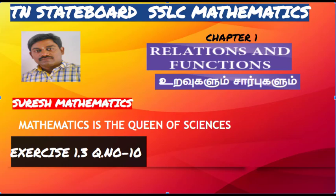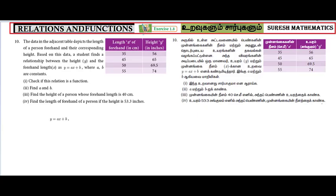Hi students, 10th Maths Chapter 1, Relations and Functions, Exercise 1.3, Question 10. The data in the adjacent table depicts the length of a person's forehand and their corresponding height. A student finds a relationship between the height y and the forehand length x as y = ax + b, where a and b are constants. Check if the relation is a function, find the height of the person whose forehand length is 40, and find the forehand length if the height is 53.3 inches.